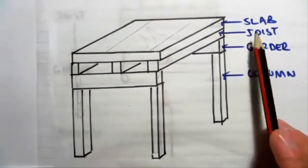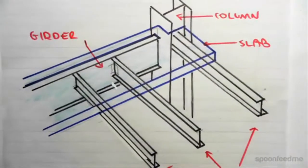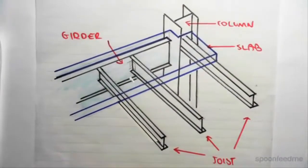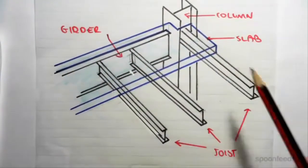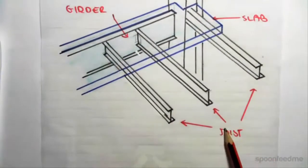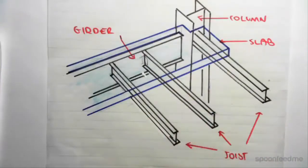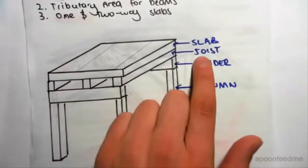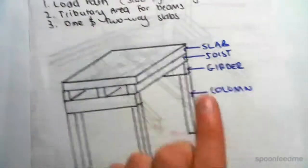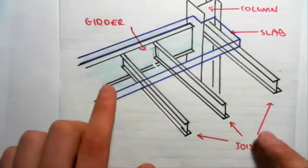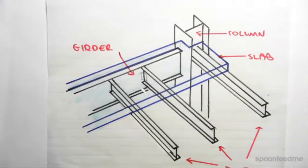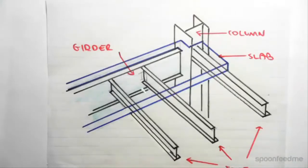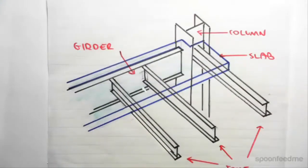Now it becomes a bit trickier. In a second type of system, we still have columns, girders, joists, and slabs, except now the girders and joists are in the exact same plane as each other. In the previous structure the joist was above the girder, but in this one the girder and joists both feed directly into the column. To work out the load path in this case, we need to determine whether the slab behaves as a one-way or two-way slab.